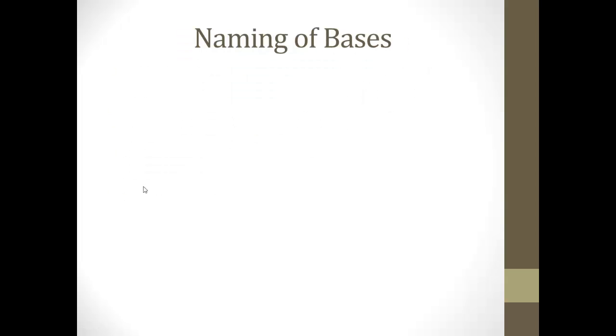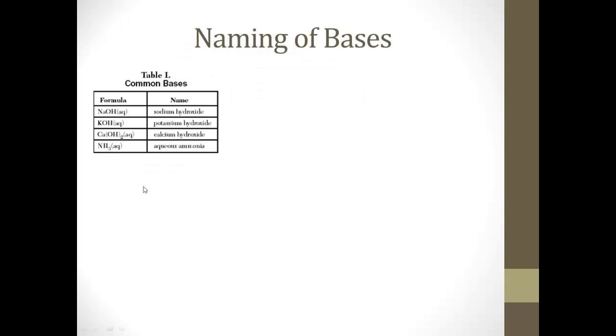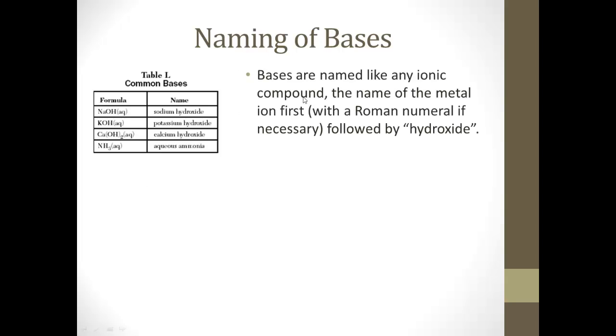Now we name bases, we just follow the same rules for naming any ionic compound. Where we have the name of the metal ion first, and with a Roman numeral if necessary, followed by, usually, hydroxide. Or, with the one exception of the most common one we'll talk about in a minute, ammonia.